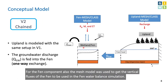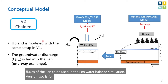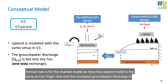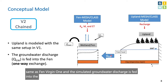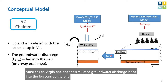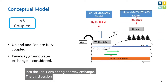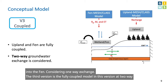Version two is the chained model, where the upland model is the same as in version one, and the simulated groundwater discharge is fed into the fen considering one-way exchange. The third version is the fully coupled model, in which a two-way groundwater exchange is considered between the upland and fen.